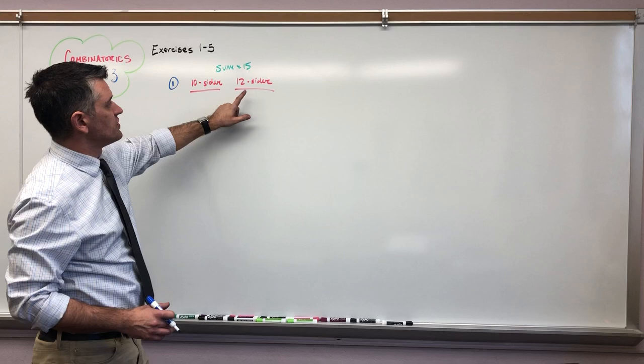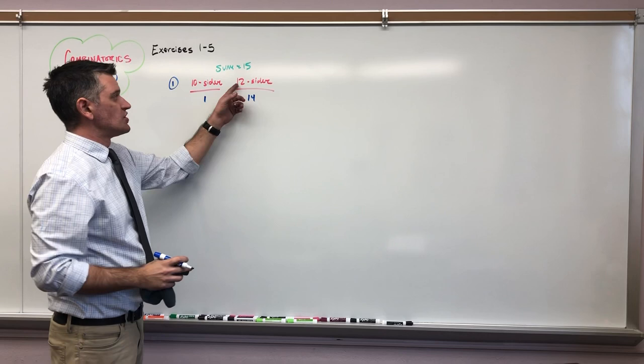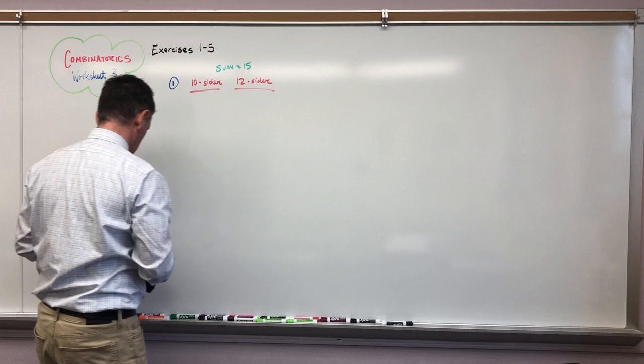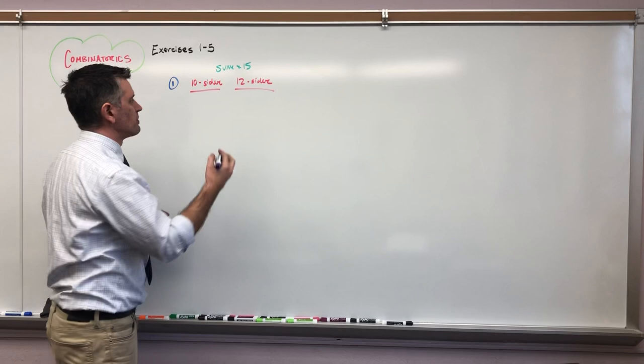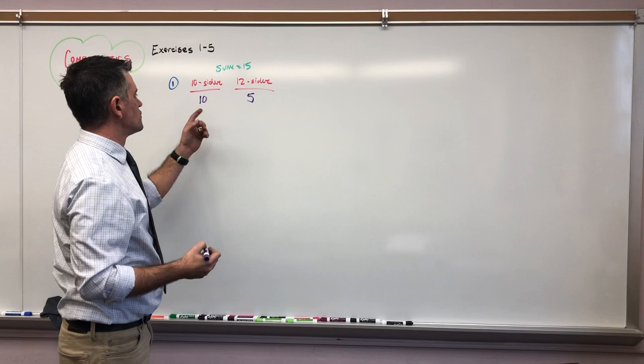Instead I'm going to pick maybe either the lowest possible 10-sided outcome or the highest possible. Now I want to make sure that I can still get a 15 if I only have a 12 to supplement it. So let's say on one hand I decide to start with getting a 1. If I get a 1 here to get a 15 I need to get 14 which is not possible on a 12-sided die.